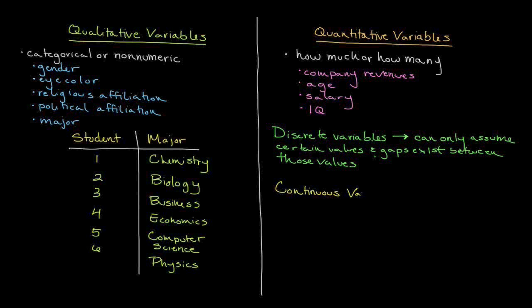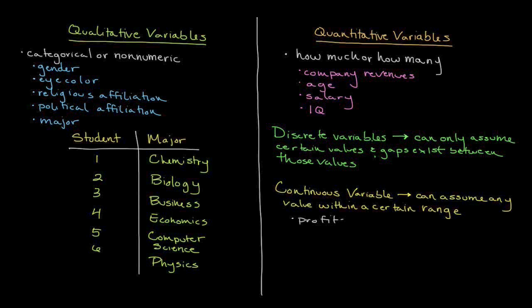A continuous variable is one that can assume any value within a certain range. A common example would be profits — profits can be very specific and are not limited to certain selections; there are no gaps. Square footage in a house could also be a continuous variable, although typically we round those figures since we don't want to be concerned with the smaller details. But ultimately, that would be a continuous variable.